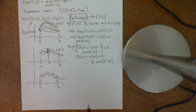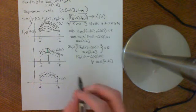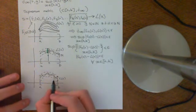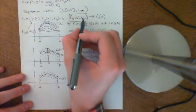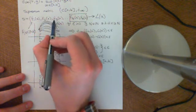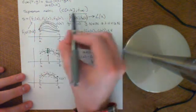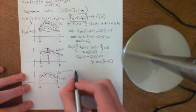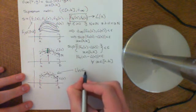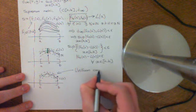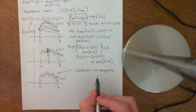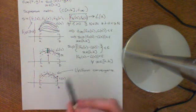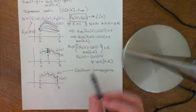This way of convergence — this mechanism by which these functions converge — has a name in real analysis: it's called uniform convergence. It's called uniform convergence because it's analogous to uniform convergence in the sequence space L-infinity.